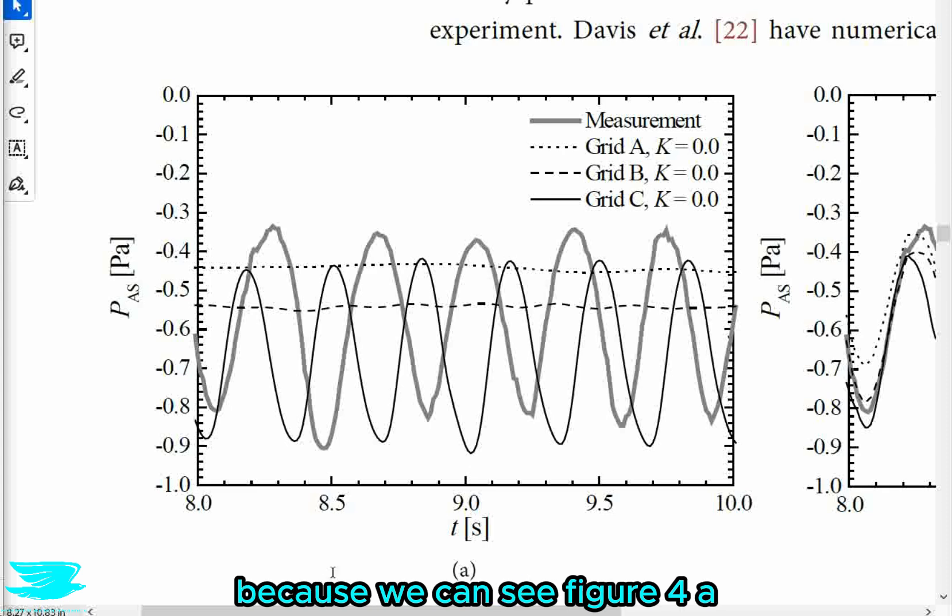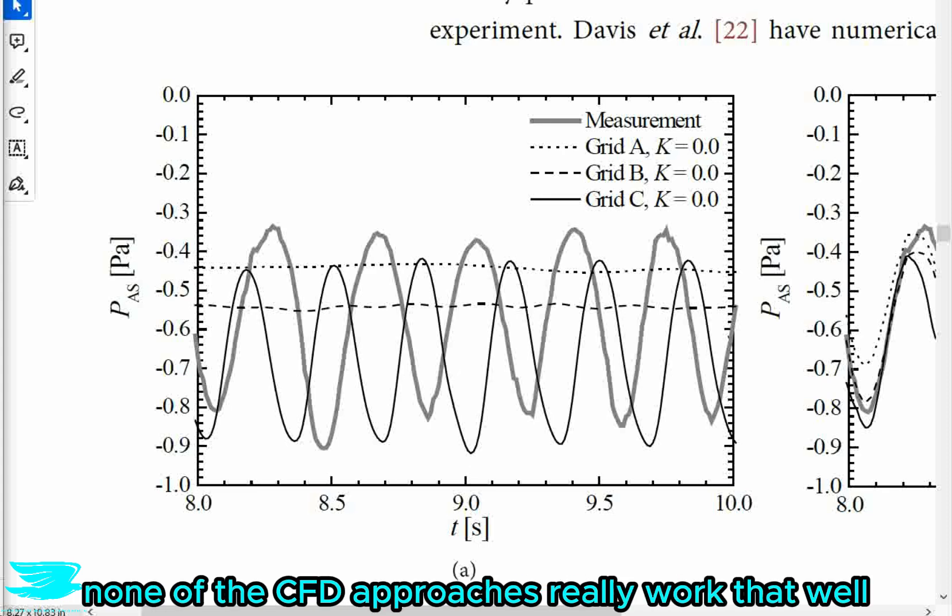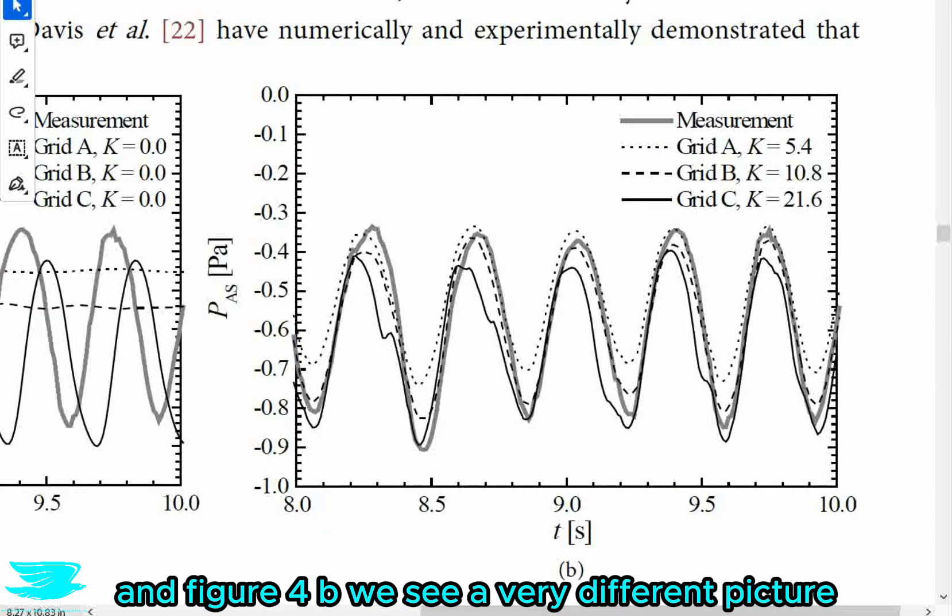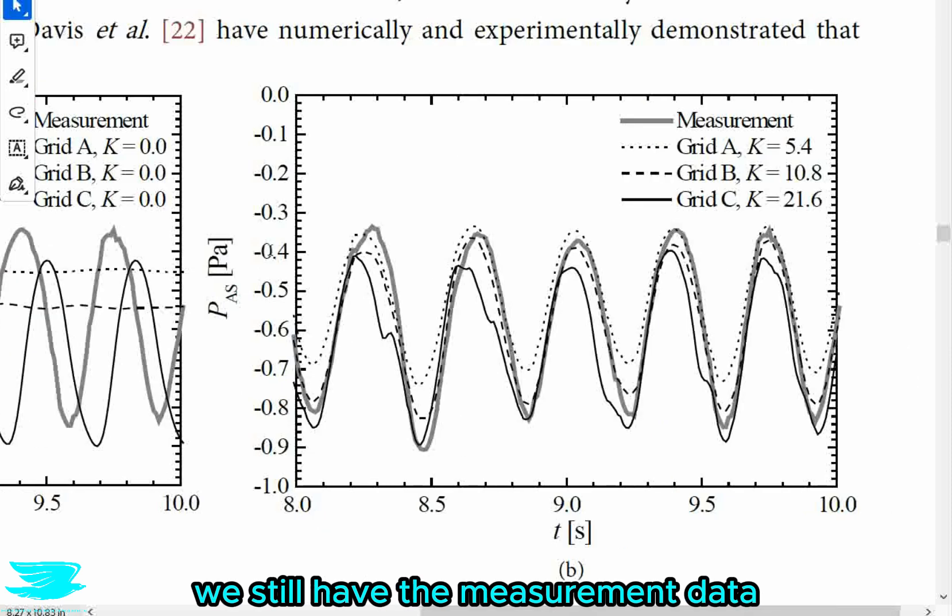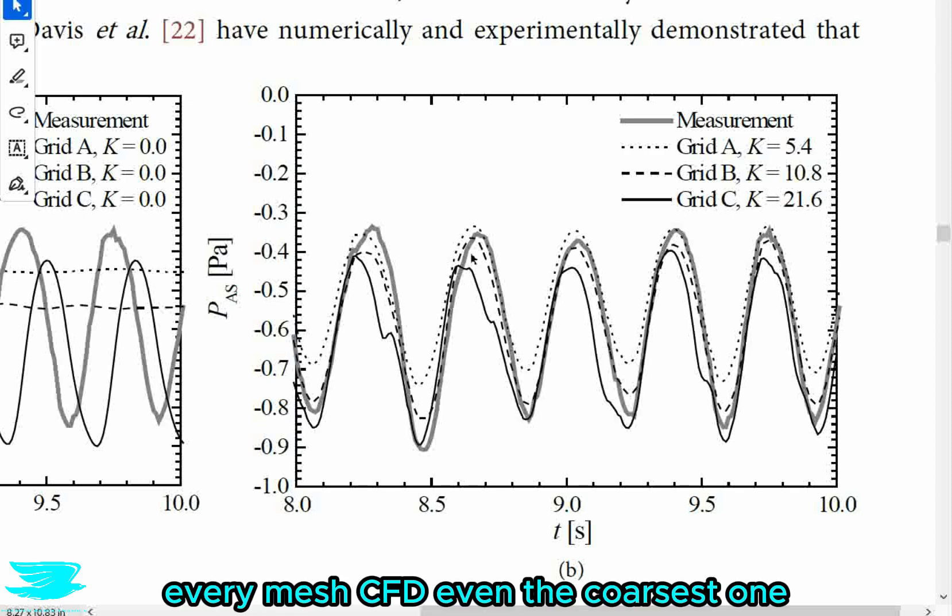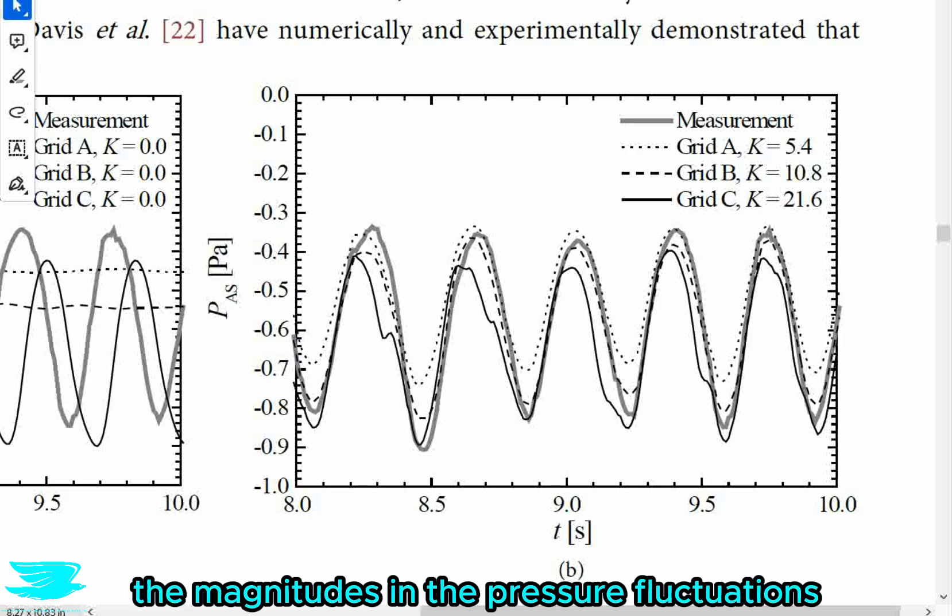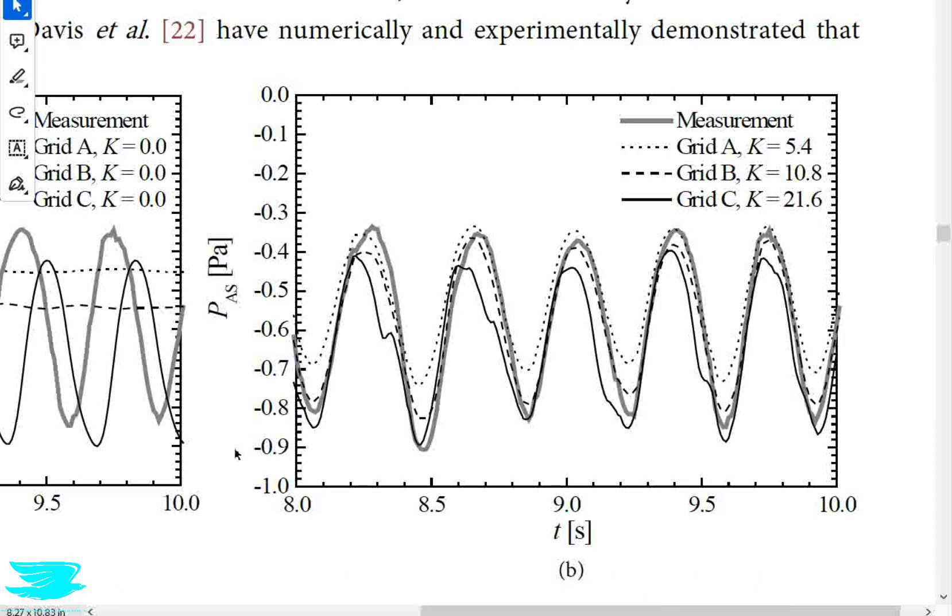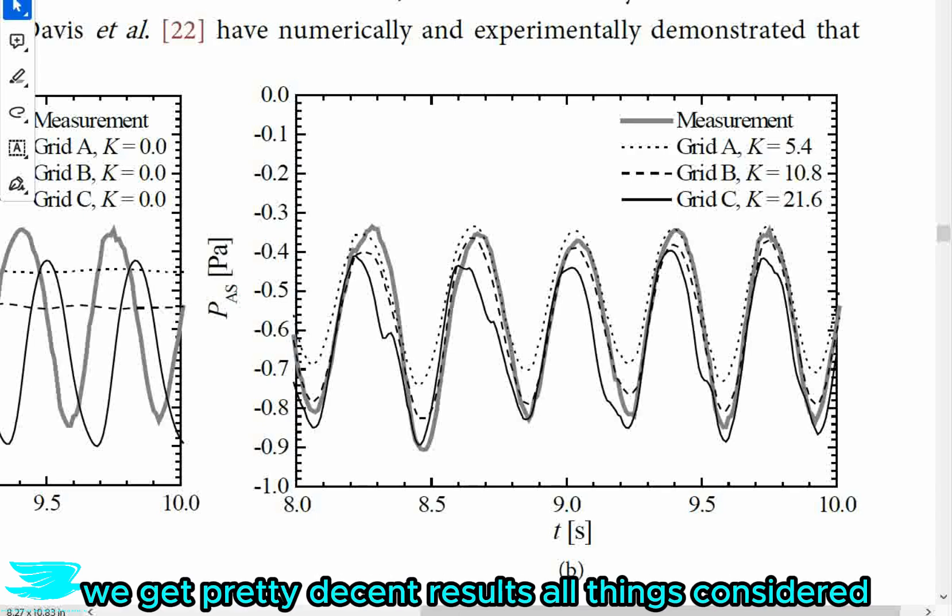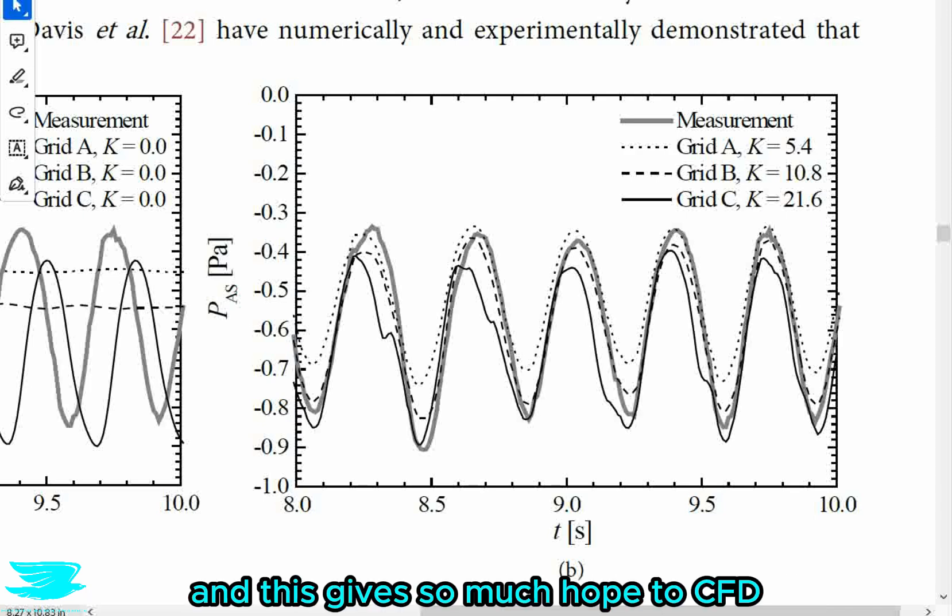Let's move to figure 4b, because we can see in figure 4a, none of the CFD approaches really worked that well. In figure 4b, we see a very different picture. We still have the measurement data, but now for every mesh CFD, even the coarsest one, we get very good approximations for the pressure fluctuations throughout time. The phases bang on for each mesh, and as the mesh gets finer, the magnitudes in the pressure fluctuations get closer and closer to what they should be.